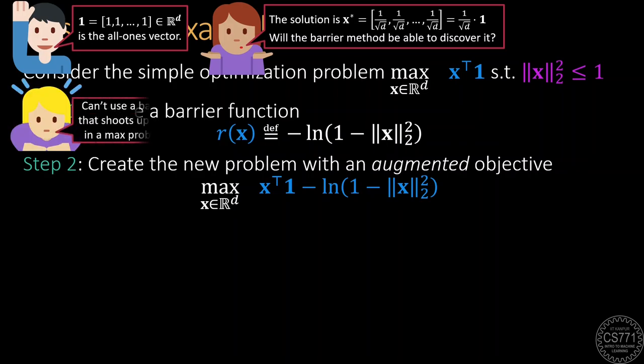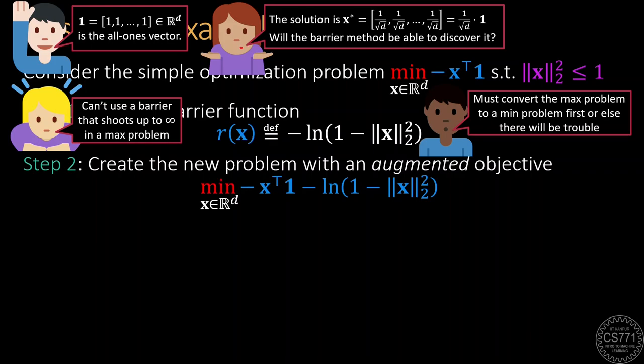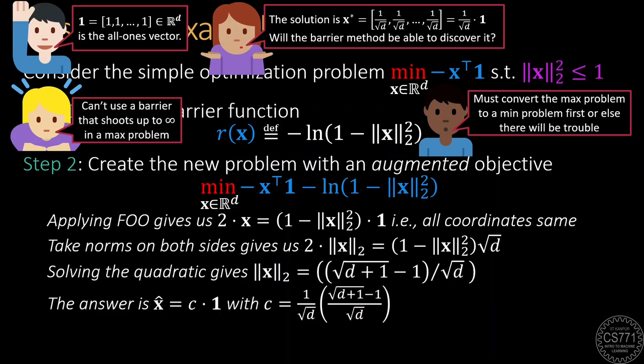To correct this error, before using these barrier functions, we must have first ensured that our optimization problem is a minimization problem. Once we have done this little bit of cleanup, we find that simply applying the first order optimality principle gives us the solution in closed form. Note that the solution respects the constraint which means that the barrier did its job properly.